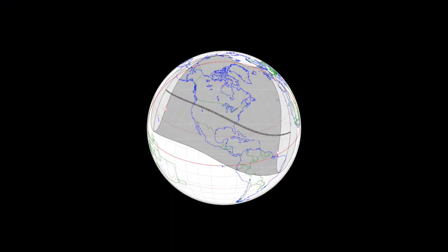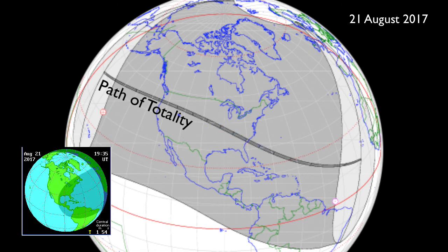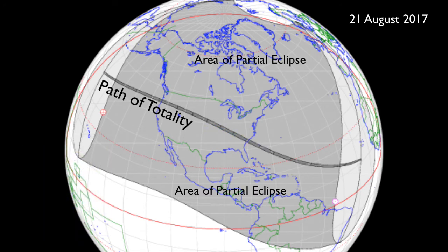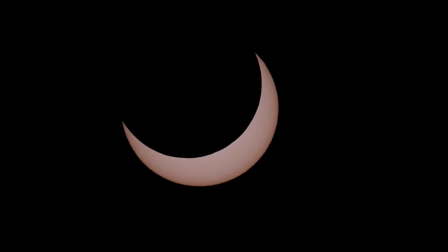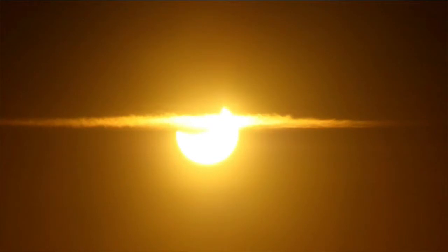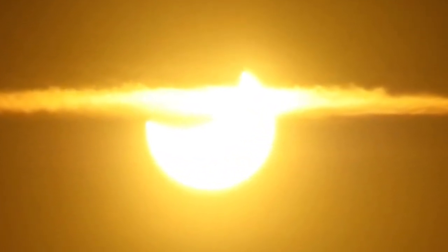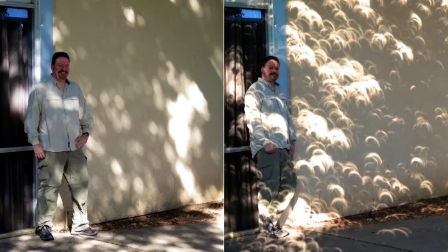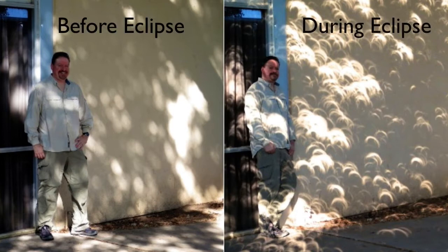If you're close, but not exactly within the narrow path of totality, you may experience a partial solar eclipse. In that case, you'll see the sun turn into a crescent shape as the moon passes in front of it. The sun is still amazingly bright during a partial eclipse. So the only way to see a partial eclipse is through a special solar filter or by casting the image of the sun through a pinhole. Pinholes made by overlapping leaves of a tree provide crescent images of the sun on the ground, as shown here.